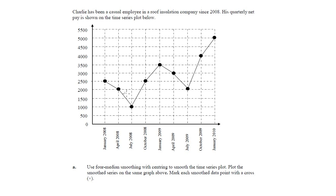We're going to do the four median smoothing and then the centering step. So starting with the four median smoothing — this is my first group of four. The middle of them going across is between the second and the third. And going up the page, the middle is between the second and the third as well. So in between those two is where the median will be, both vertically and horizontally. The median point is there.